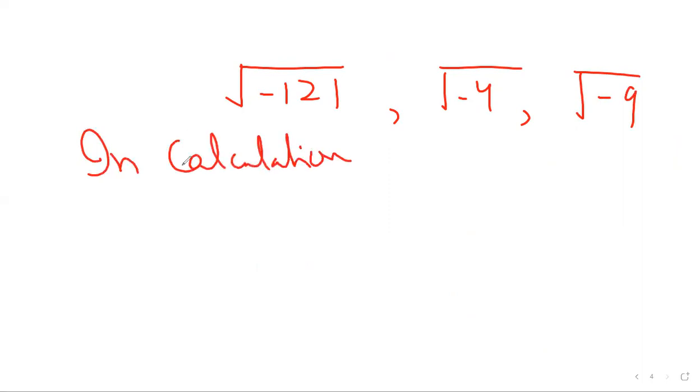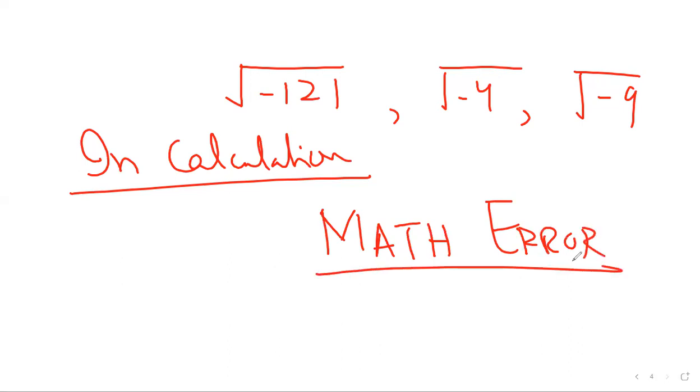One more thing: whenever you will write it down, under root of minus 121, for example minus 4, minus 9, in the calculator, when you will find out the solution with the help of the calculator, you will get the math error. The calculator will show math error. What is the reason? Because they all are complex, and the calculator will not get the value of this one until and unless the calculator will change into the mode of complex.